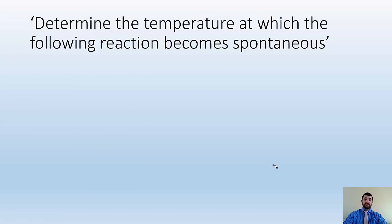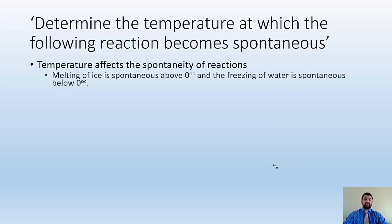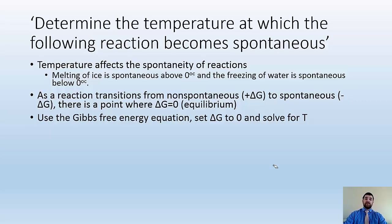You're going to see problems that say: determine the temperature at which the following reaction becomes spontaneous. Temperature affects spontaneity — melting of ice is spontaneous above zero degrees Celsius, and freezing of water is spontaneous below zero degrees Celsius. As a reaction transitions from non-spontaneous to spontaneous, delta G passes through zero, which is at equilibrium. So we set delta G to zero and solve for T.